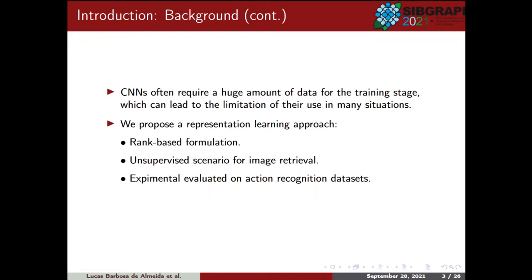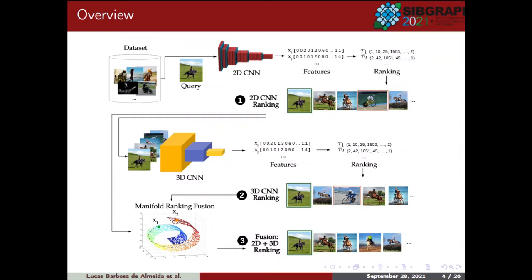Presenting an overview of our approach, we have the following figure. We propose the construction of a more comprehensive and effective data representation for image retrieval by supplying transfer learning and manifold learning algorithms through a ranking-based formulation. The main goal is to achieve more effective retrieval results based on a representation provided for unsupervised scenarios where no labelled data is available. Firstly, we use a transfer learning formulation based on a 2D CNN trained in another large-scale dataset. The 2D CNN features are used to rank the images from the analysed dataset — Step 1. The computed rankings define the sequence of images used as input to a 3D CNN. The 3D CNN is also trained by transfer learning, and the features extracted are used to compute another set of rankings. In the last step, both rankings defined by 2D and 3D CNNs are fused by manifold learning algorithms in order to compute the final retrieval results — Step 3.